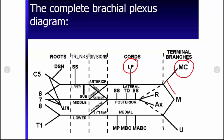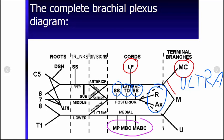In that case, the posterior cord would be ultra, U-L-T-R-A. That would be the upper subscapular, the lower subscapular, thoracodorsal, radial, and axillary. And then the medial cord would be these. So one mnemonic we can use here is,